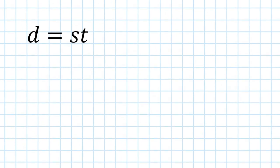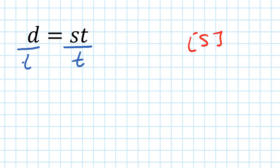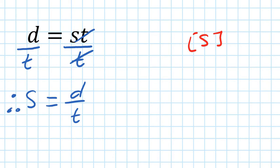Distance travelled equals speed times time: D equals s times t. Let's make s the subject — make speed the subject. We want to leave s by itself, so we divide everything by t. Divide by t on both sides — that t cancels out. So s equals D over t.